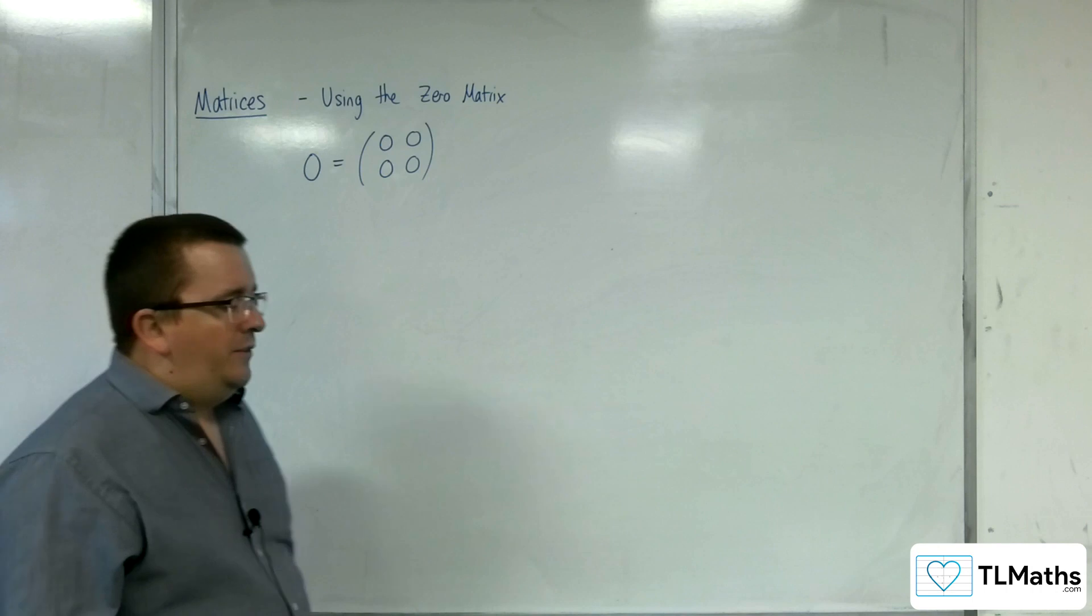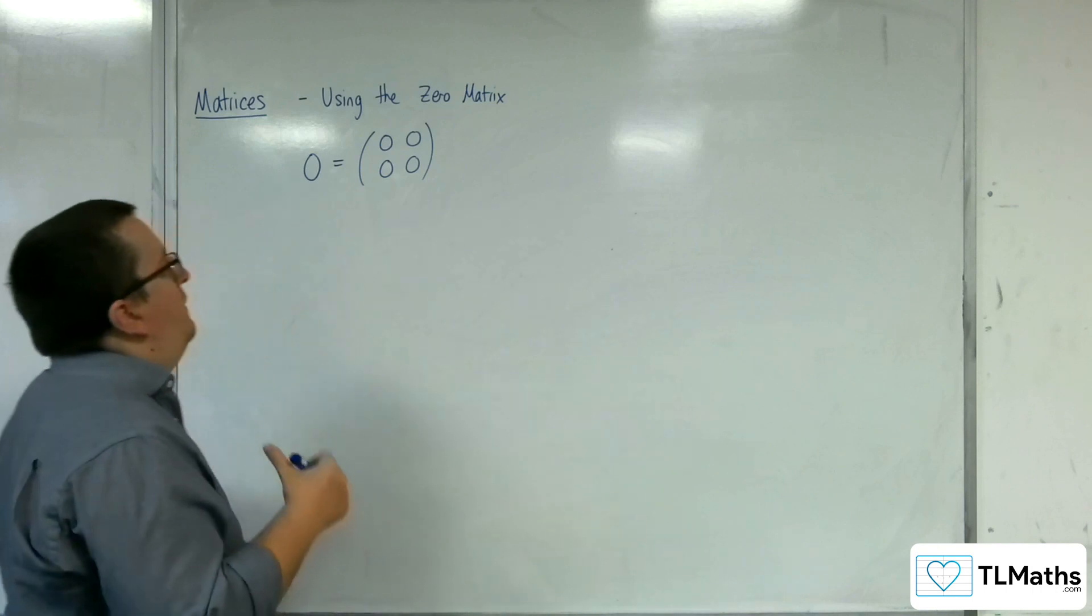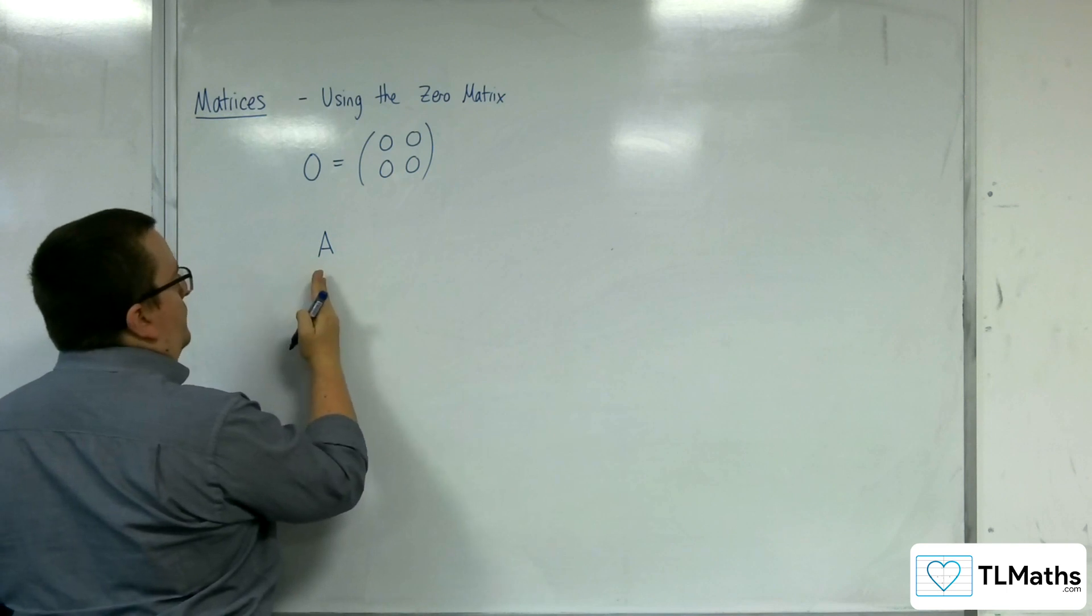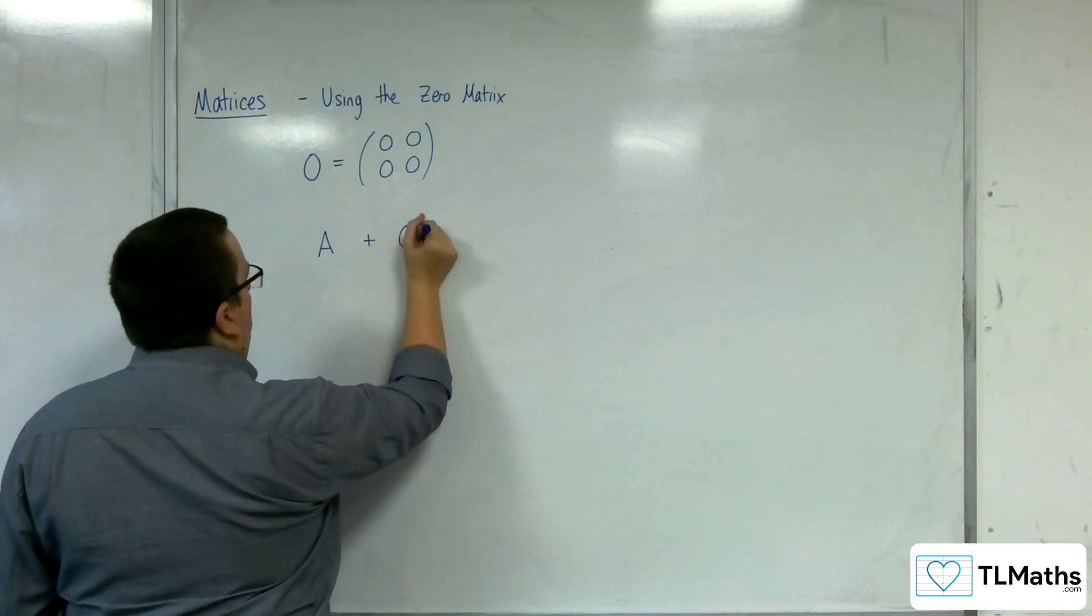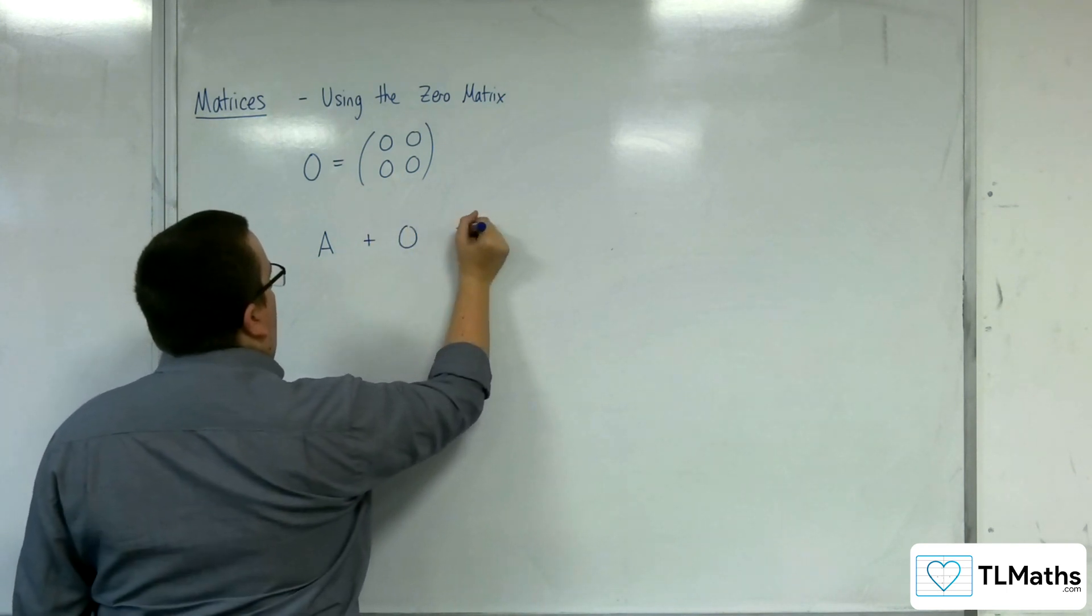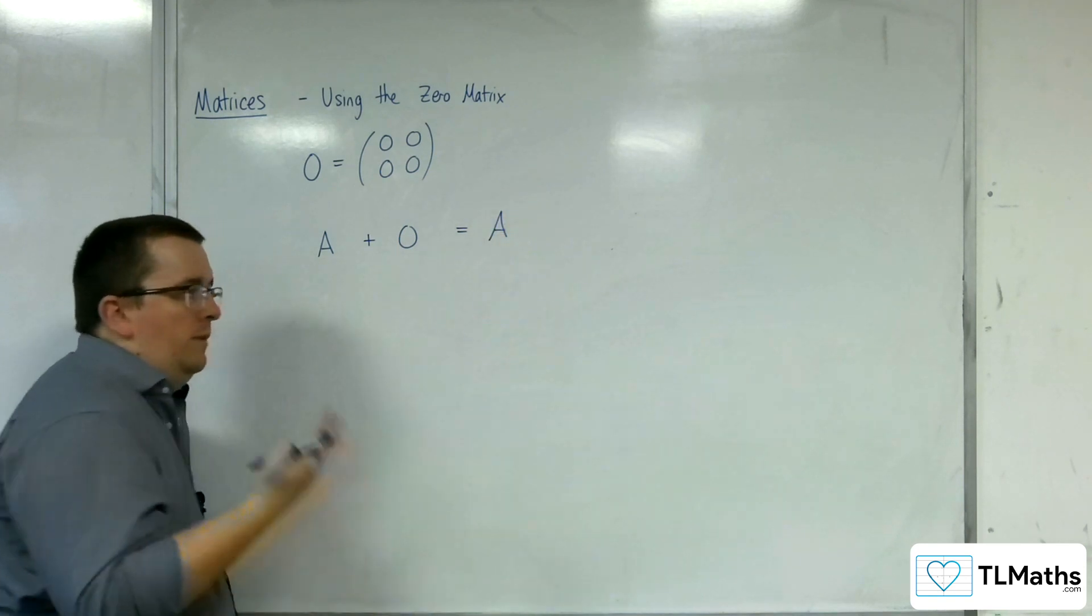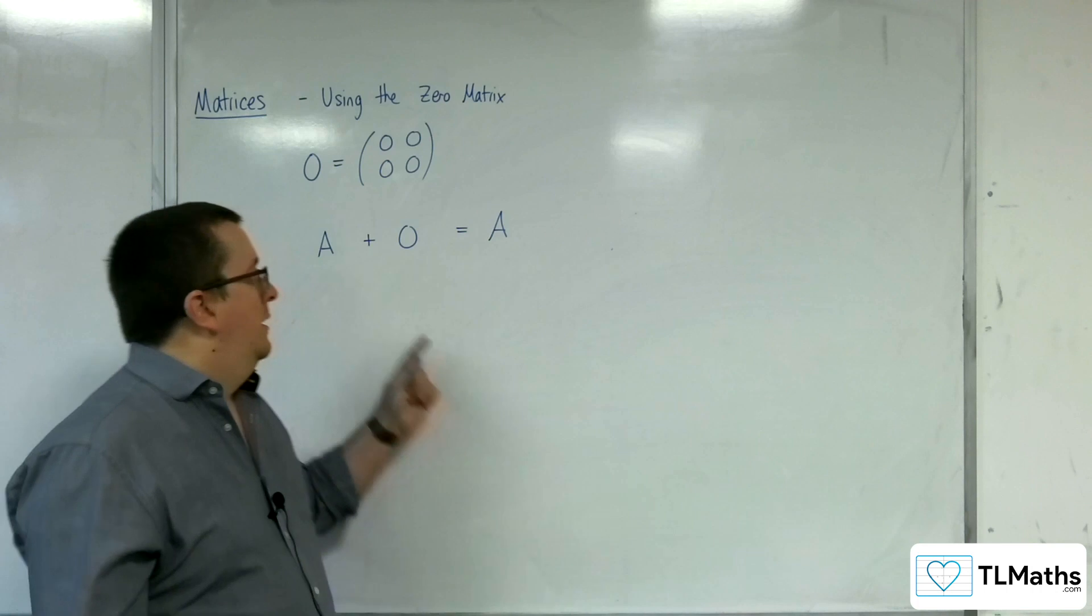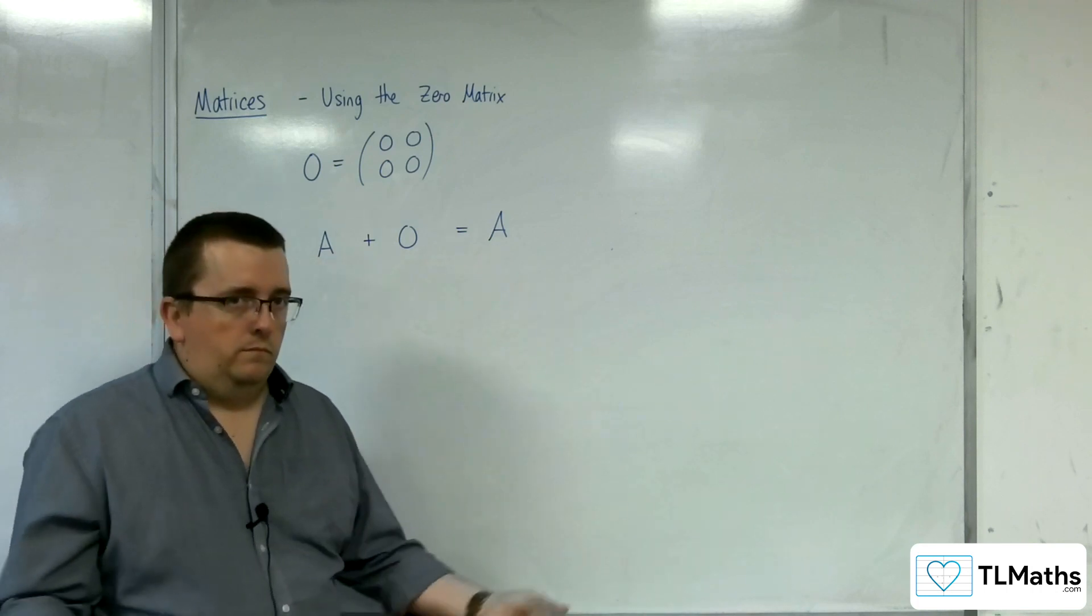What you kind of need to understand is that if you have a matrix, so matrix A, and you add the zero matrix, then you get the original matrix in return, much as you would like a number. One plus zero is one, okay?